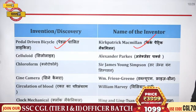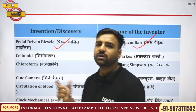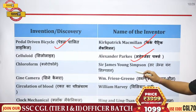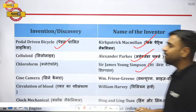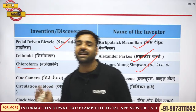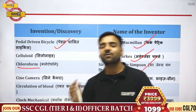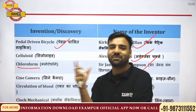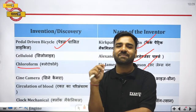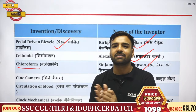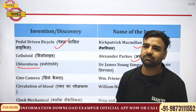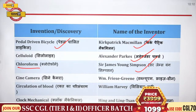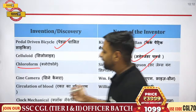Celluloid was discovered by Alexander Parkes. Chloroform was discovered by Sir James Young Simpson. Where is chloroform used? In some movies during kidnapping scenes, chloroform is placed on a handkerchief near the nose and that person loses their senses. That is Sir James Young Simpson's discovery.